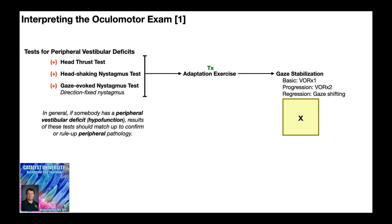The most basic one, which is almost always given at the start, is the VOR times one. Now there's a progression of that and a regression. The progression is more difficult. That's the VOR times two, and then the regression is called gaze shifting.